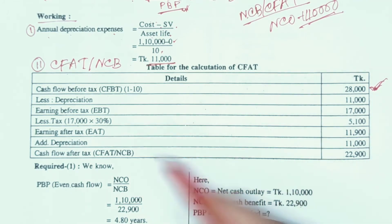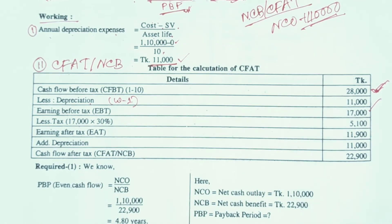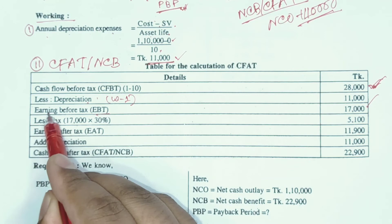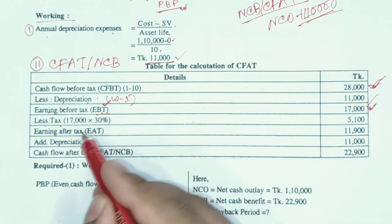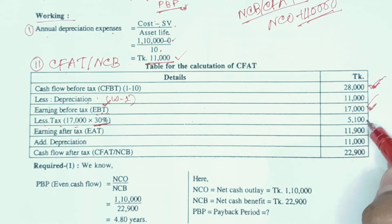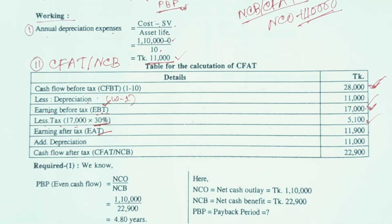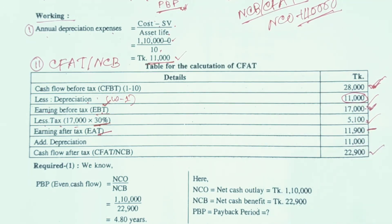Here, the revenue is 70,000 taka. From that, we deduct tax of 30%, which gives us the after-tax amount. Then we add back depreciation of 11,000 taka to that figure. Adding these together gives us today's expected result — the CFAT (Cash Flow After Tax) or NCB (Net Cash Benefit).